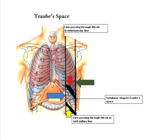Once you draw the mid-clavicular line and the mid-axillary line, you need to identify two points on each line. First, identify the sixth rib in the mid-clavicular line, and then the ninth rib in the mid-axillary line. When you join these two points, the black line marked by the red arrow forms the upper margin of Traube's space.